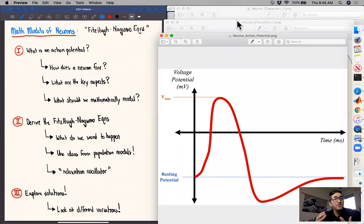Hey everyone! In this series of videos, we're going to start discussing the mathematics behind neurons. In particular, we're going to talk about the foundational aspects of how to mathematically model what are called action potentials.